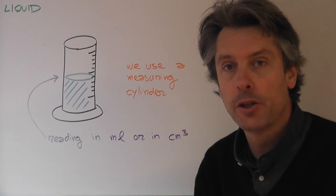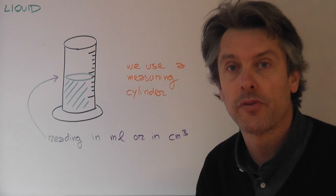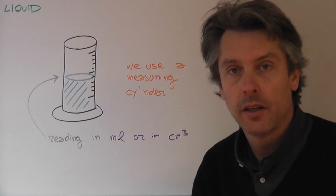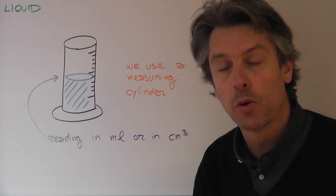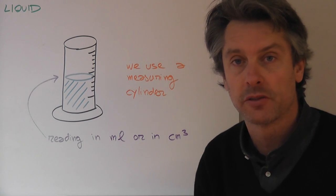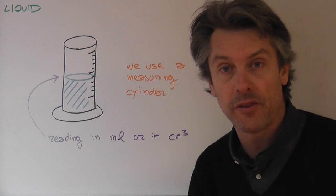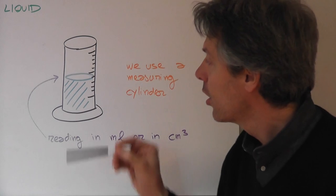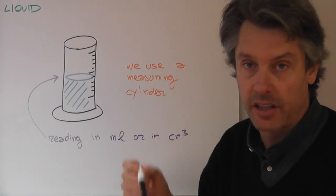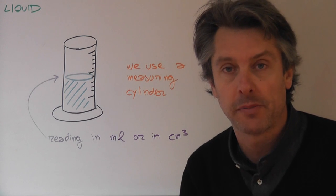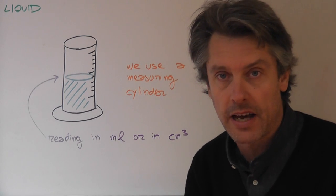Now, sometimes you will be asked to measure the volume of a liquid. In that case, you use the property that liquids will take the shape of a container. So we're going to use a very special type of container called a measuring cylinder, which, as you can see, is a cylinder, usually made of a transparent material, like plastic or glass.